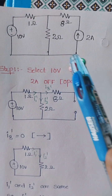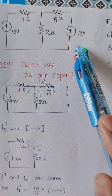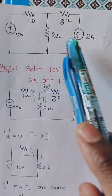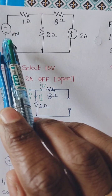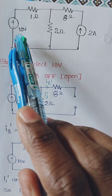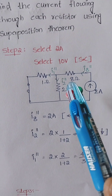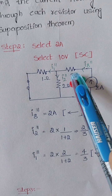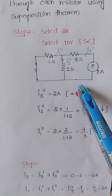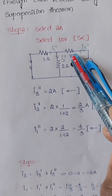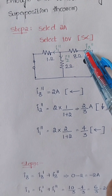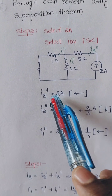Step 2: We now select the 2 ampere current source and deactivate the 10 volt voltage source. Since a voltage source has zero internal resistance, it is short-circuited. With the 2 ampere source active, the 8 ohm resistor is a simple series branch with no node split, so the full 2 amperes flows through the 8 ohm resistor, with current direction from right to left.